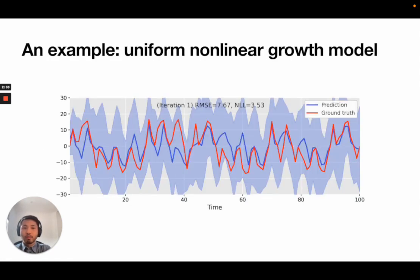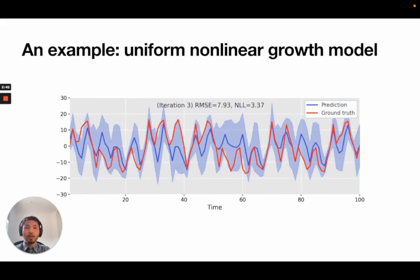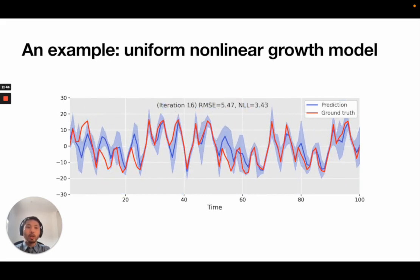We demonstrate the efficacy of this approach on the uniform non-linear growth model, which is a highly non-linear system that is difficult to tackle with traditional Gaussian smoothers. We see that upon iterating power EP with damping, we get increasingly good state estimates that typically outperform the results by classical smoothers.